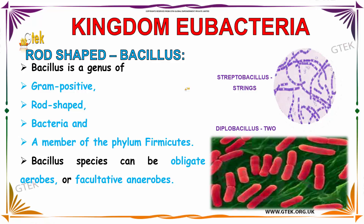Let us talk about rod-shaped Bacillus. Rod-shaped Bacillus is a genus of gram-positive rod-shaped bacteria and a member of the phylum Firmicutes. The Bacillus species can be obligate aerobes or facultative aerobes. You can see Diplobacillus, which has two rod-shaped bacteria.